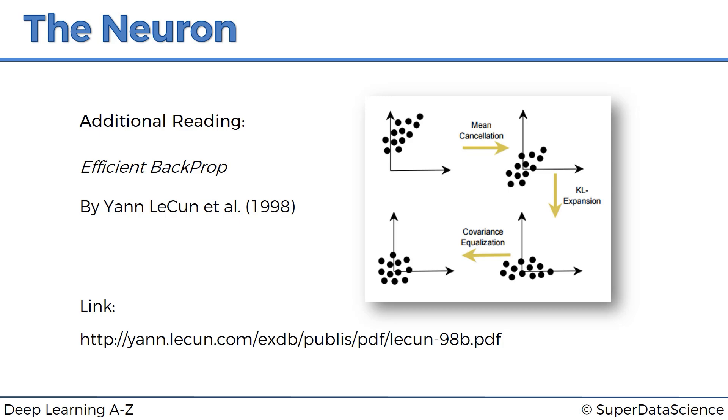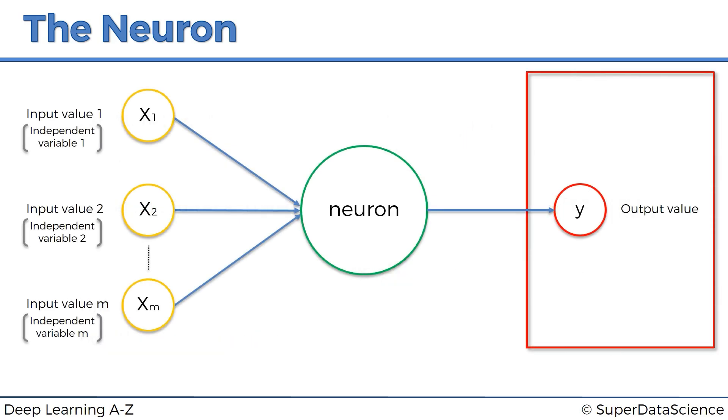And here we've got the output value. So what can our output value be? Well, we've got a couple of options. Output value can be continuous, like for instance, price. It can be binary, for instance, a person will exit or will stay, or it can be a categorical variable. And if it's a categorical variable, the important thing to remember here is that in that case, your output value won't be just one, it'll be several output values, because these will be your dummy variables, which will be representing your categories. But let's go back to a simple case of one output value.